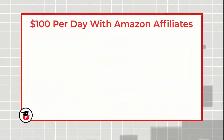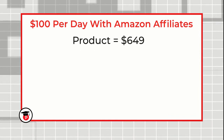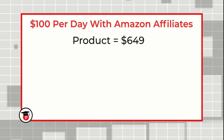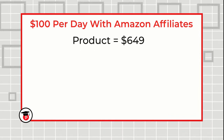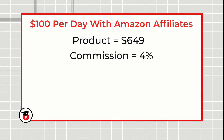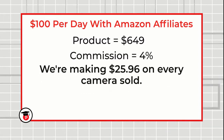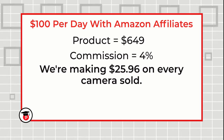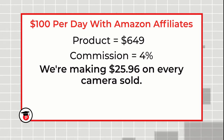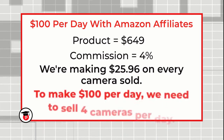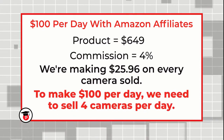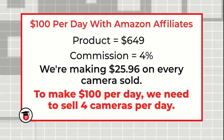For example, if we're selling a camera worth $649 and our commission is 4%, then we're making $25.96 on every camera sold. In order to make $100 per day on YouTube with your Amazon affiliate link, you only need to sell 4 cameras per day.